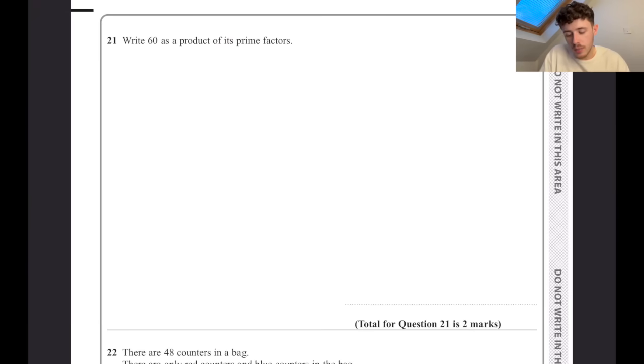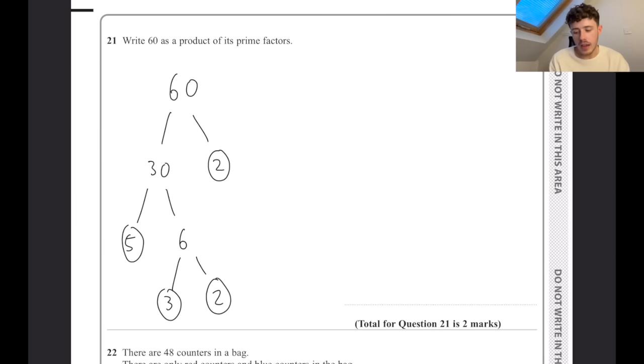Write down 60 as a product of its prime factors. To do that, we make the tree: 30 and 2, circle the prime numbers as you go, 5 and 6, 3 and 2. As a product of its prime factors, 60 is therefore 2 squared times 3 times 5, product because you times them all, and prime factors because they're prime numbers that are factors.